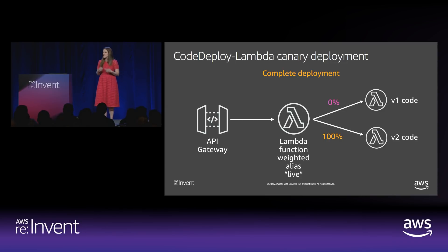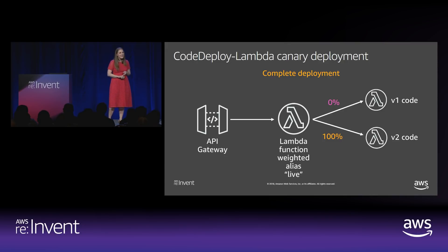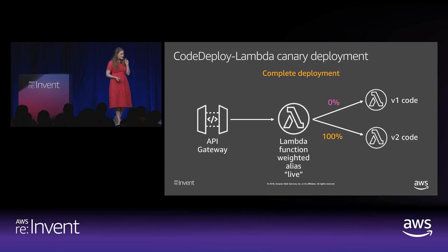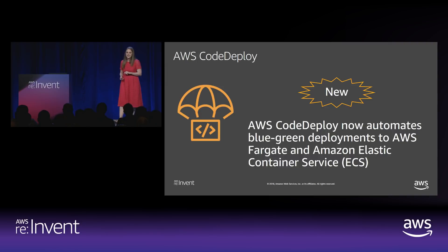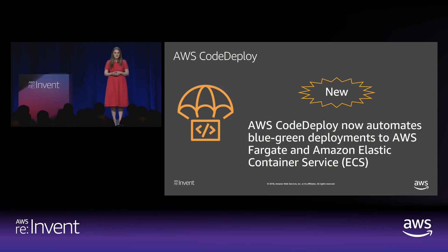CodeDeploy deploys to EC2, Lambda, and on-premise instances — but again, something is missing for containers. I'm super happy to announce feature launch number two: AWS CodeDeploy now automates blue-green deployments to AWS Fargate and Amazon ECS.